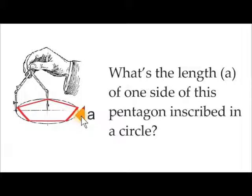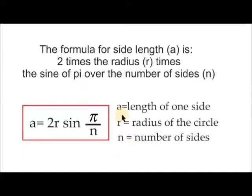What is the length A of one side of this pentagon inscribed in a circle? A equals the length of one side, R equals the radius of the circle, and N equals the number of sides.